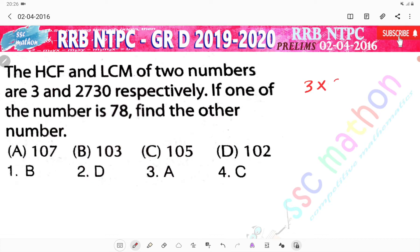HCF is 3, LCM is 2730. The multiplication of the numbers - one number is 78, the other number is x. So, x equals 3 into 2730 divided by 78.